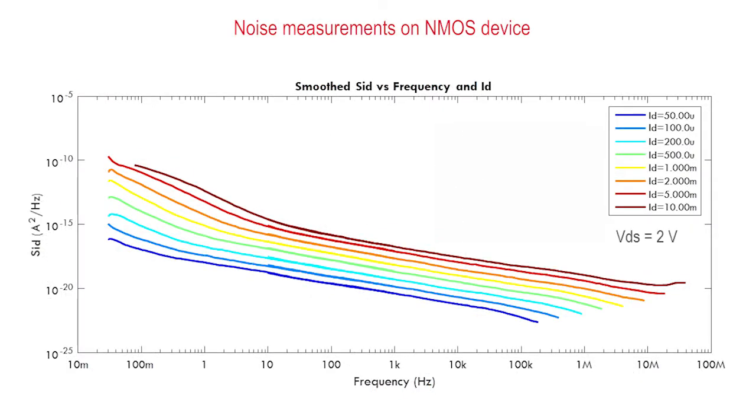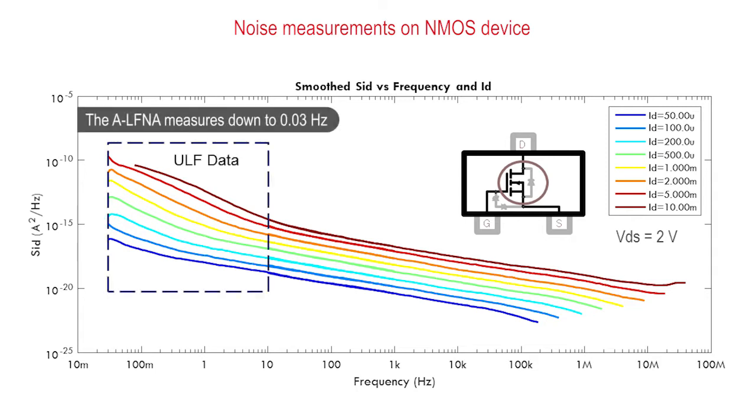Here, we observe real measurements on an NMOS device. We see that the current noise density depends on device current. Thanks to the ALFNA hardware architecture, we are able to measure down to 0.03 Hz.